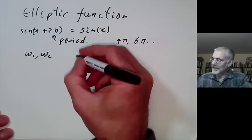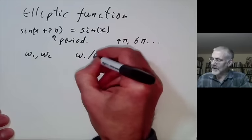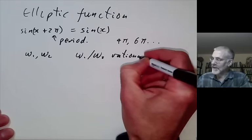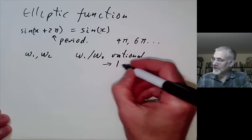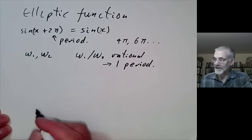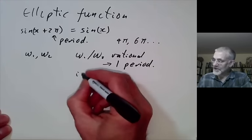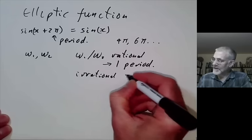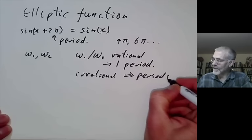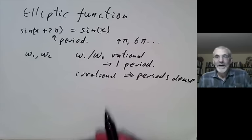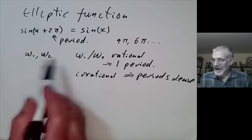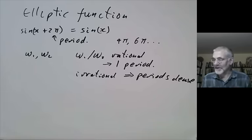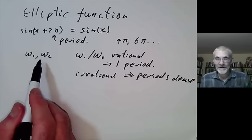At first sight it seems you can't, because if omega 1 over omega 2 is rational, you can just take the greatest common divisor and there is essentially only one period generating them. If it's an irrational real, the periods are dense, and this means the only function with all those periods is essentially constant if it's continuous. So there doesn't seem to be any way of having two independent periods — that's if you're talking about functions of a real variable.